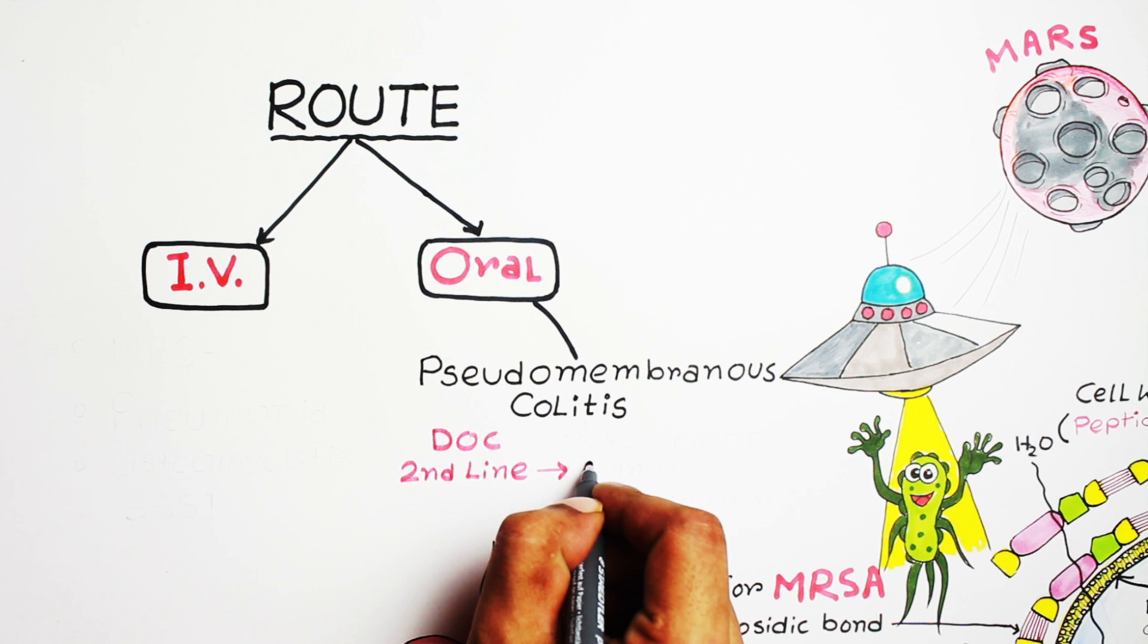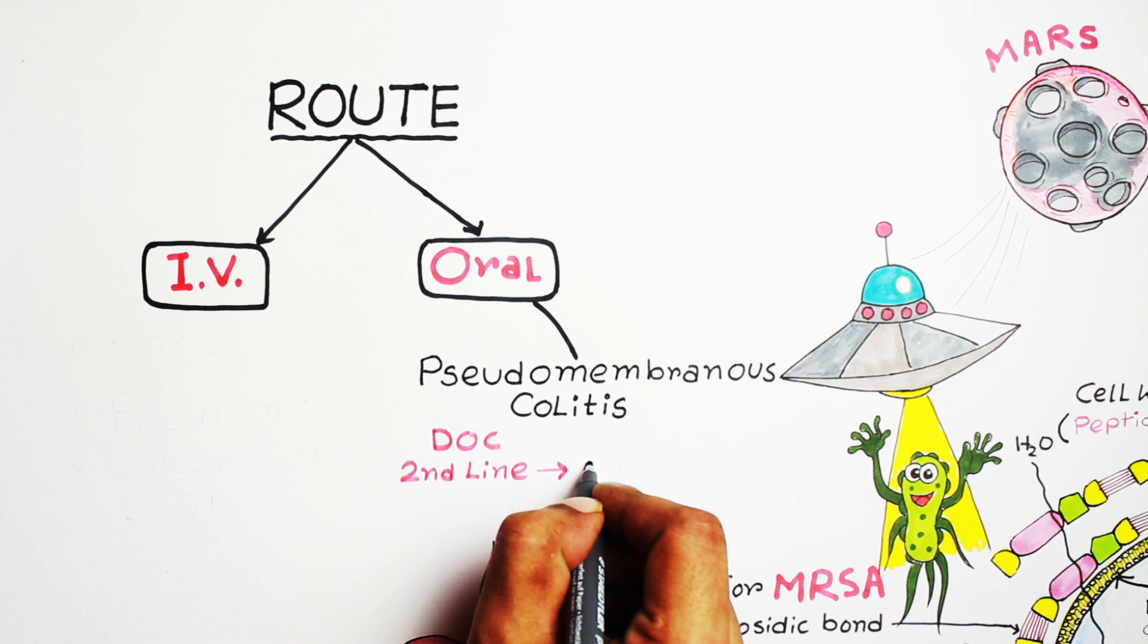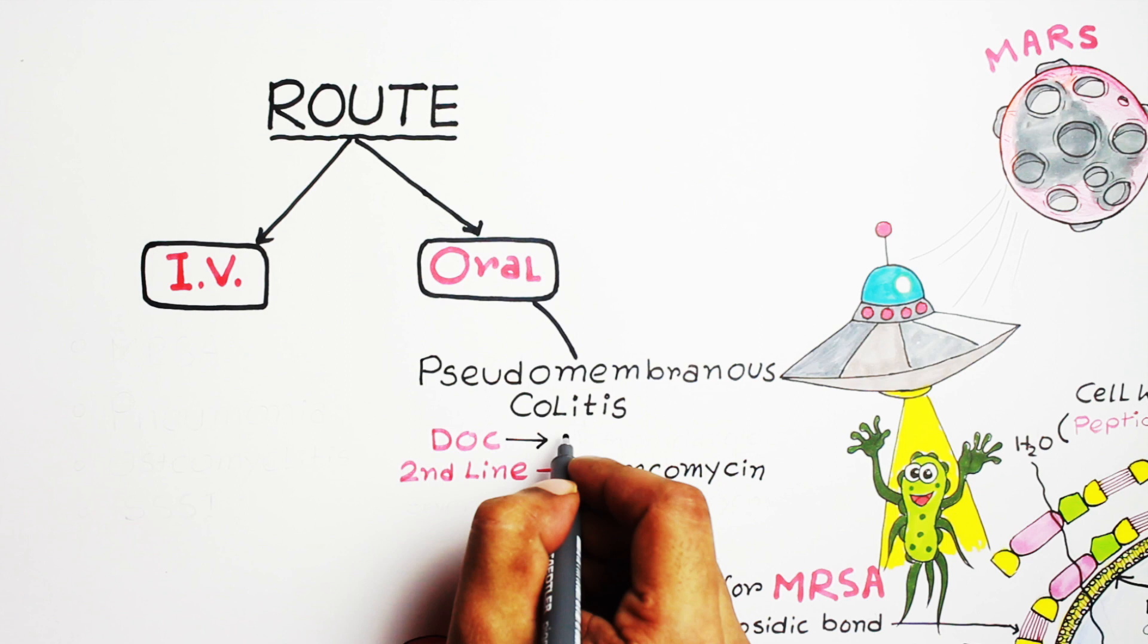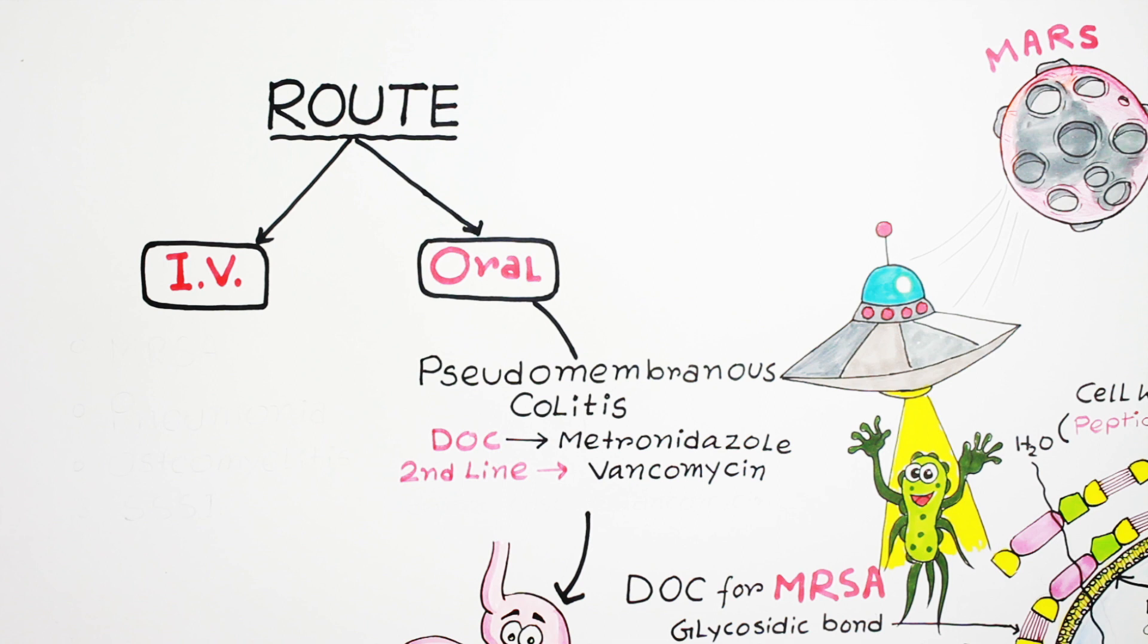So what is the first-line drug or drug of choice? If you think metronidazole, then you are right. The drug of choice for pseudomembranous colitis is metronidazole. But I would like to share an interesting point you should remember: actually vancomycin is more effective or more potent than metronidazole in the treatment of pseudomembranous colitis, still it is not commonly used.